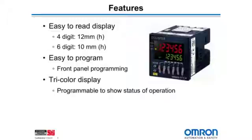First, the easy-to-read process value display. If you have the four-digit model, the process value will be 12 millimeters high. If you have the six-digit model, the process value will be 10 millimeters high.